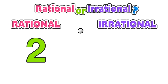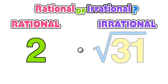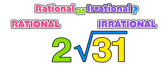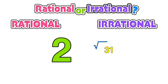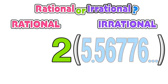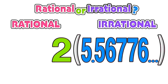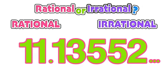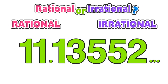For example, if we had a rational number of 2 and we multiply it by the irrational number square root of 31, the square root of 31 evaluates to a non-repeating decimal, which when multiplied by 2 evaluates to another non-repeating decimal — 11.13552 — going on and on forever. We can see this is clearly an irrational number, helping us understand why the product of a rational and irrational number is always equal to an irrational number.